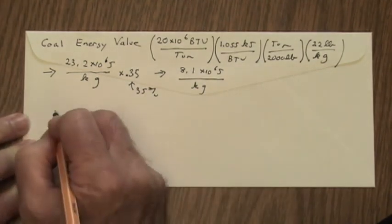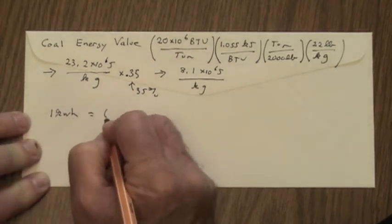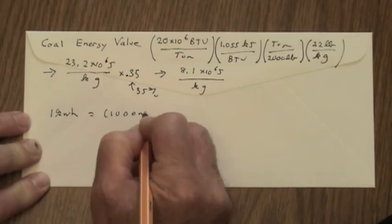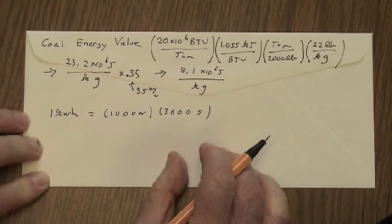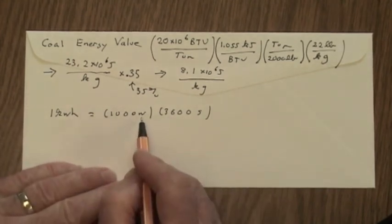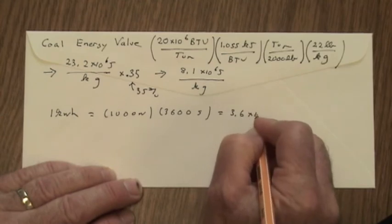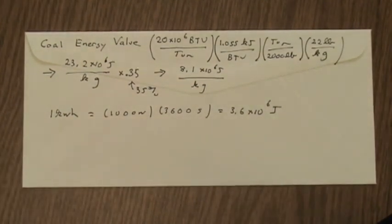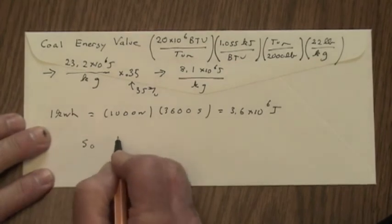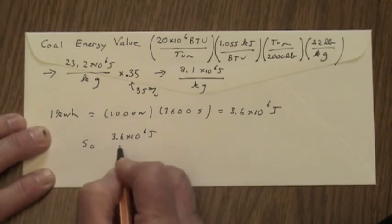Now, back to the kilowatt hour. 1 kilowatt hour is equal to 1,000 watts times 3600 seconds. A watt is 1 joule per second, so this is equal to 3.6 times 10 to the sixth joules. So we know that there are 3.6 times 10 to the sixth joules per kilowatt hour.